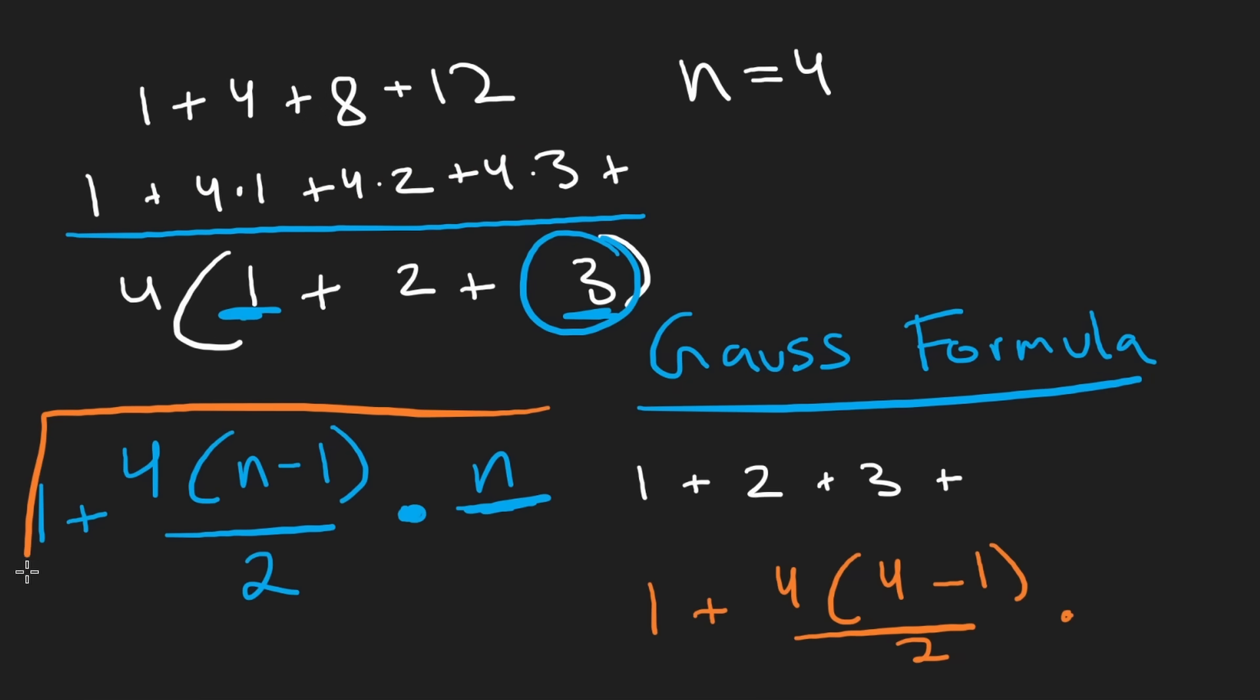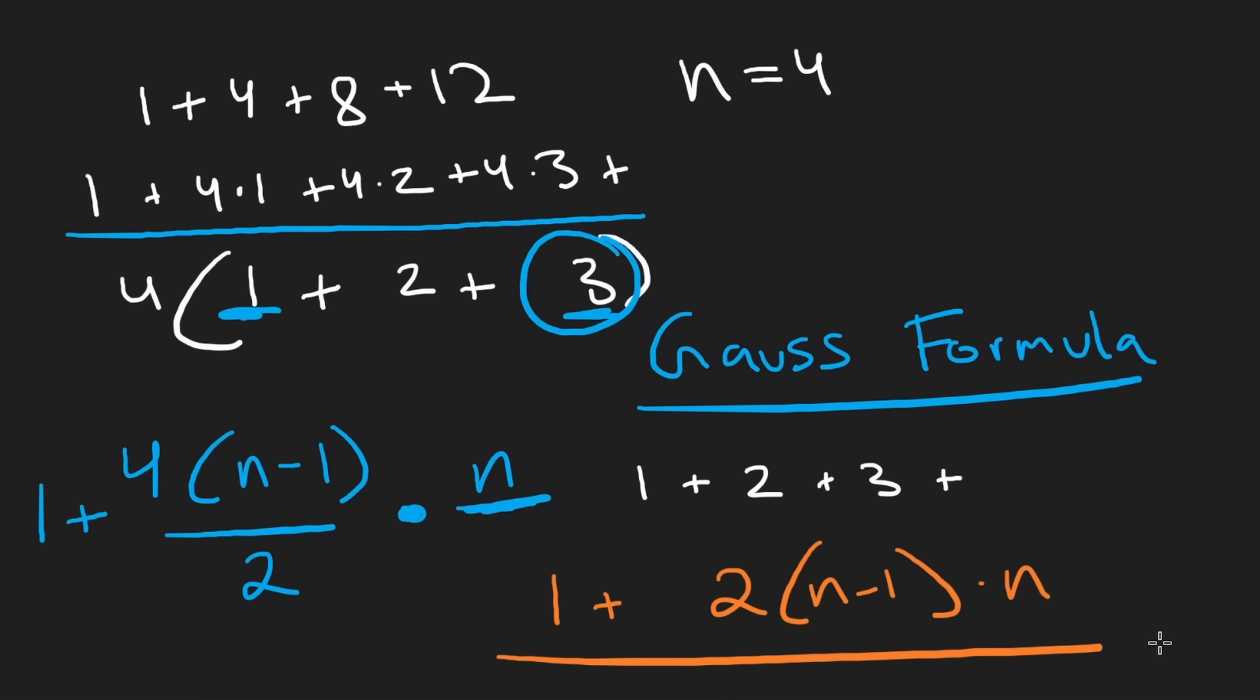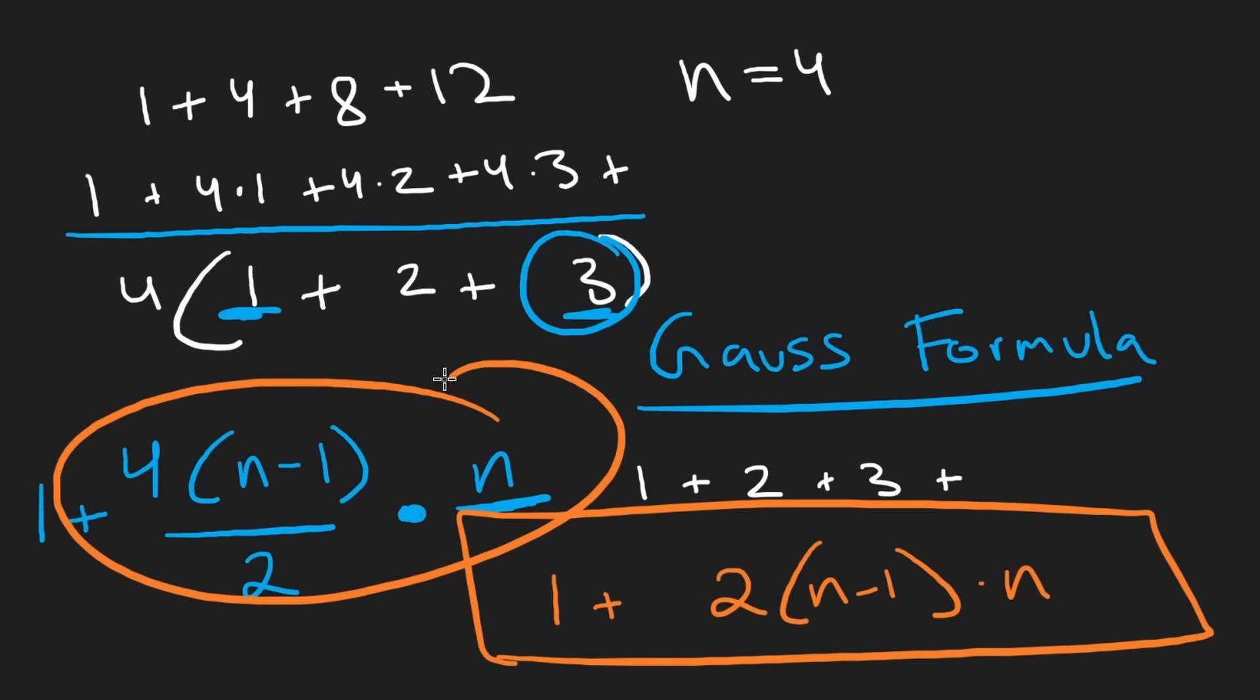Now if you want to simplify this function further, which you really don't need to, to solve this problem in constant time, you can. I think you can simplify it slightly more to be one plus two times n minus one times n. I guess that's fine as well. But either way, like either of these you use, the time complexity will be the same. Let's code it up.